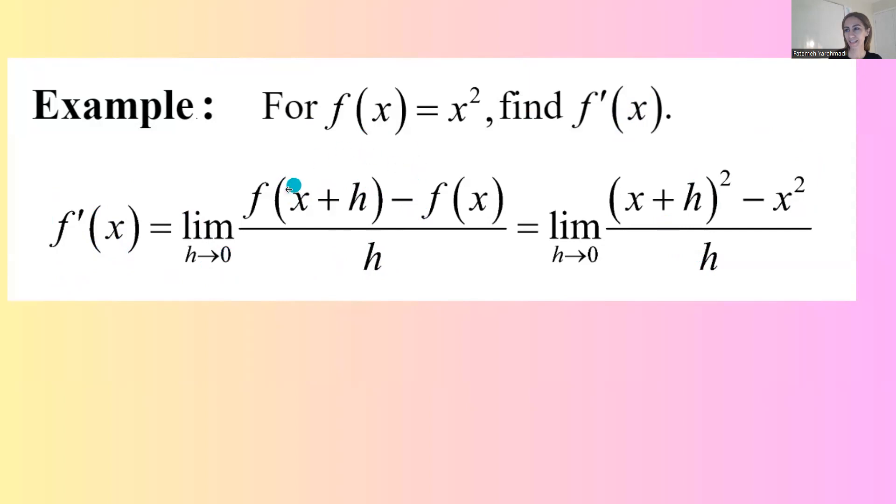Then where we see x, we're going to substitute that by x plus h. That's how you end up with x plus h to the second power minus f of x. But f of x is basically x squared divided by h as h goes to 0.